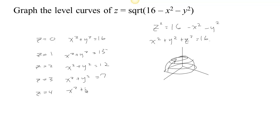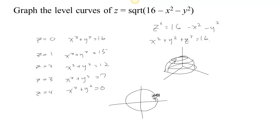At z equals four, x squared plus y squared equals zero — we're down to a single point at the top. So our level sets are circles starting at radius four for z equals zero, then slightly less than four for z equals one (those curves are very close together), then √12 between three and four for z equals two, then √7 just less than three for z equals three, and finally just a single point for z equals four at the top of the sphere.